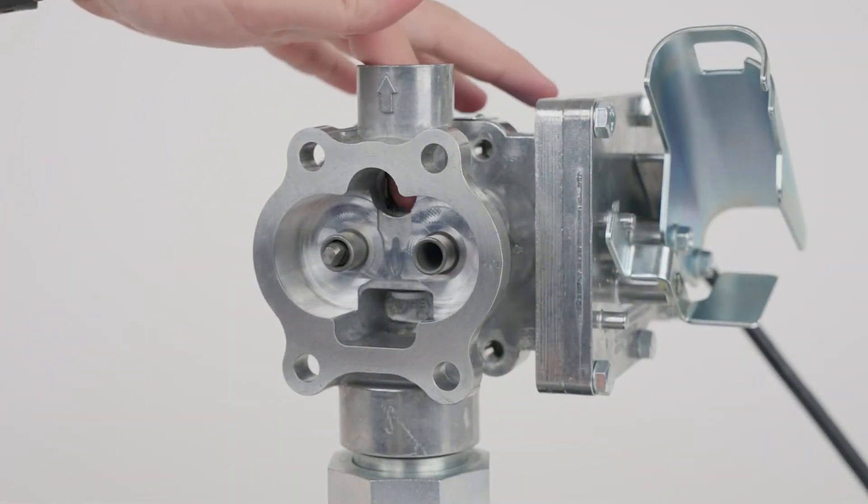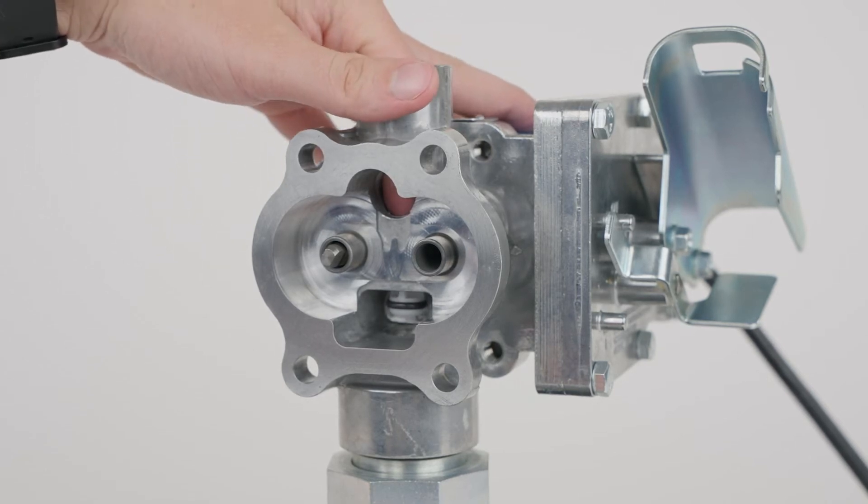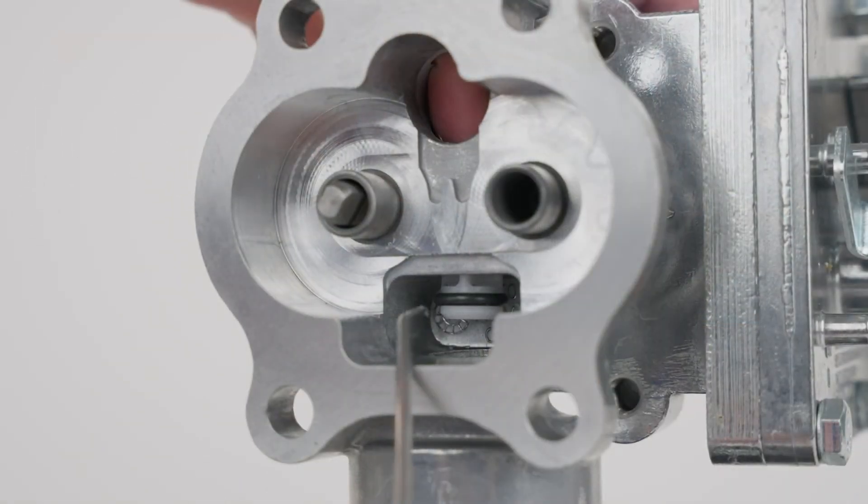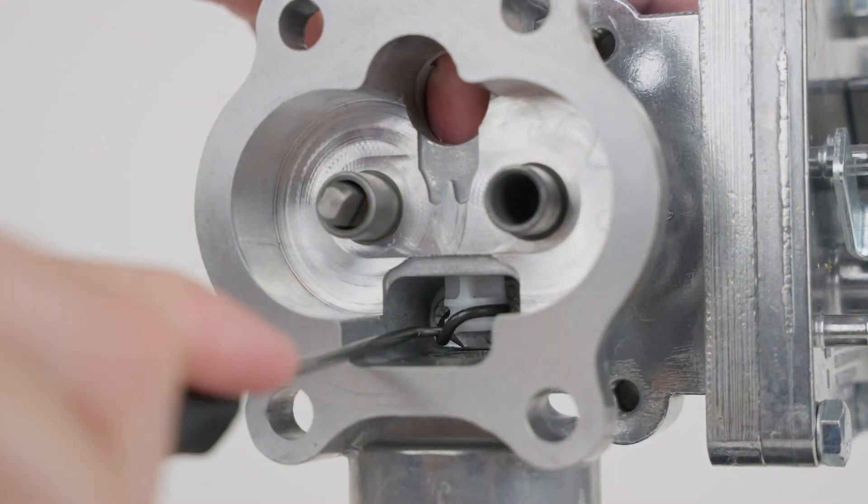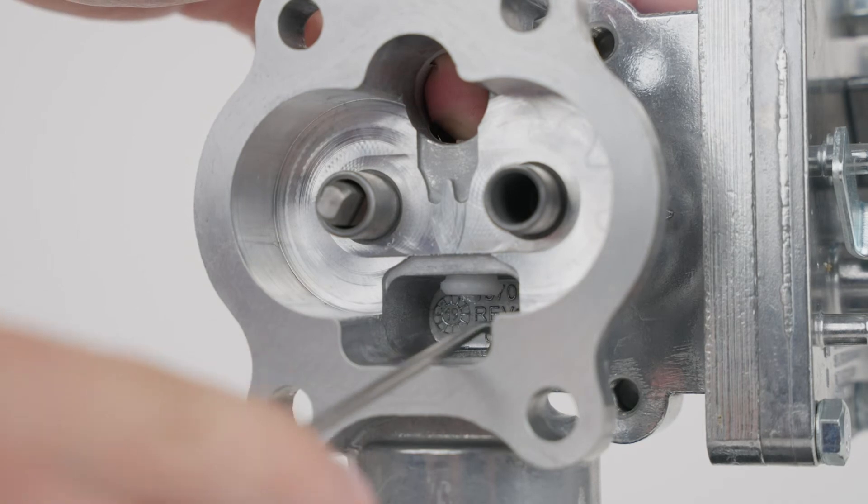To remove the poppet o-ring, push down on the poppet until the o-ring is exposed. Carefully remove the o-ring with a small screwdriver and inspect the o-ring to ensure it is not damaged, swollen, or loose fitting.